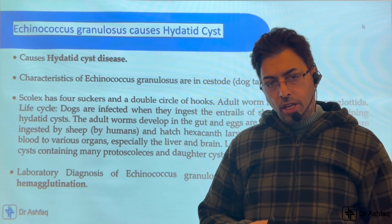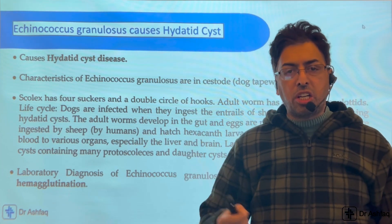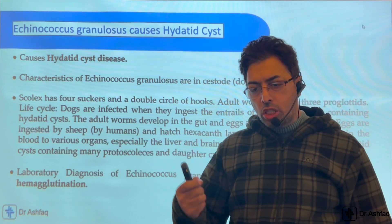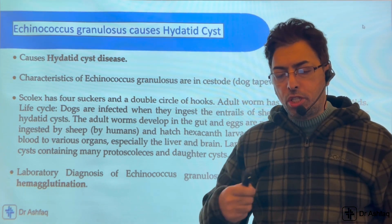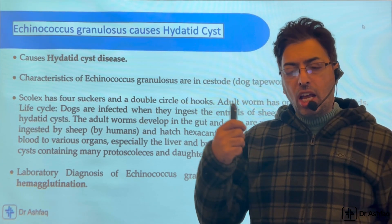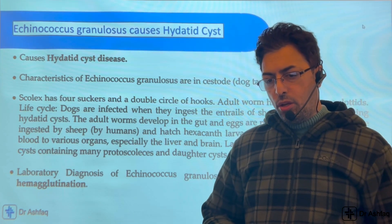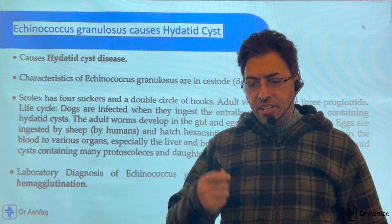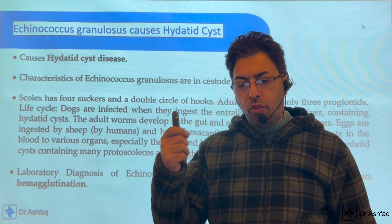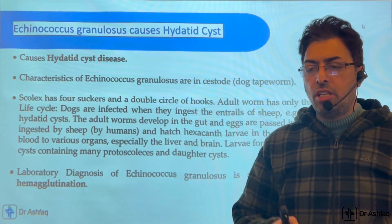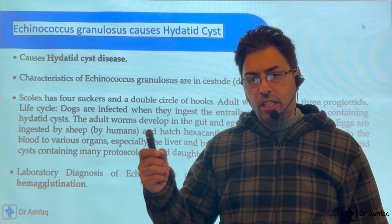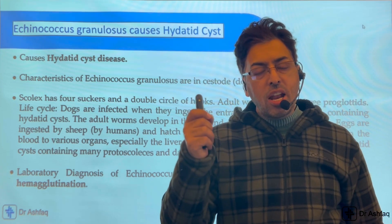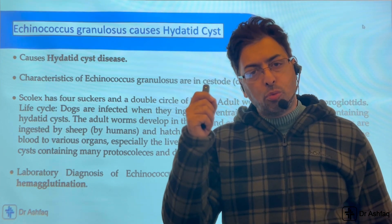You should study the microbiology: the scolex, circle of hooks, proglottids, and the life cycle involving dogs and sheep. Regarding the life cycle of Echinococcus granulosus, the eggs are ingested by sheep, hatch in the gut, and migrate via blood to various organs. In humans, they migrate from the gut to the liver and other organs like the brain, which gives the condition known as disseminated hydatidosis — liver is the primary focus but all other organs may be affected.